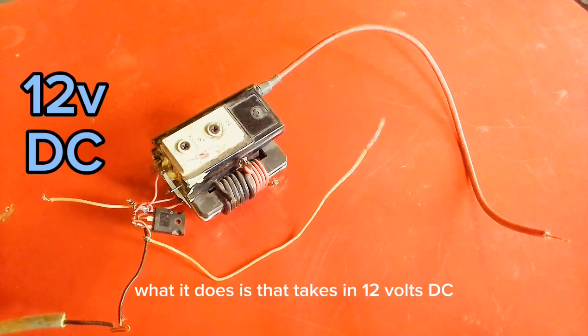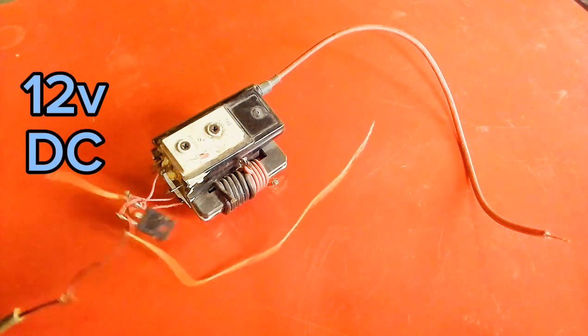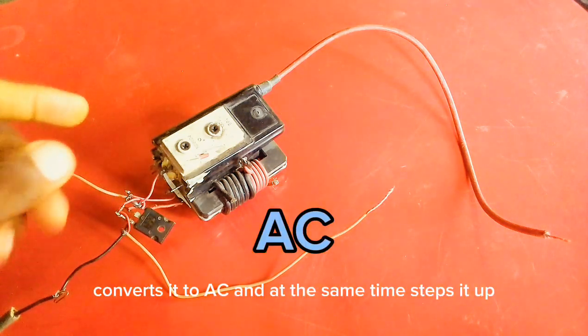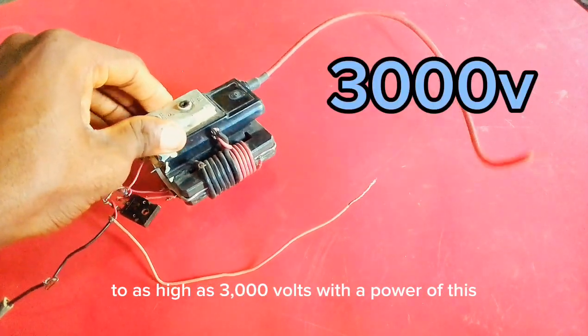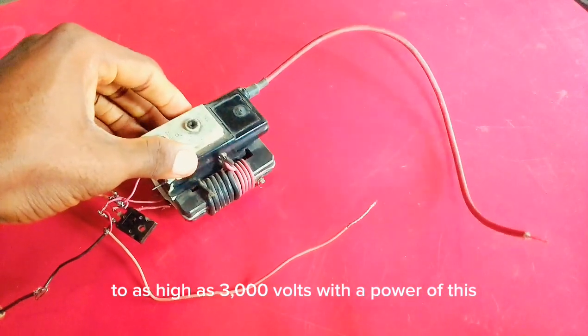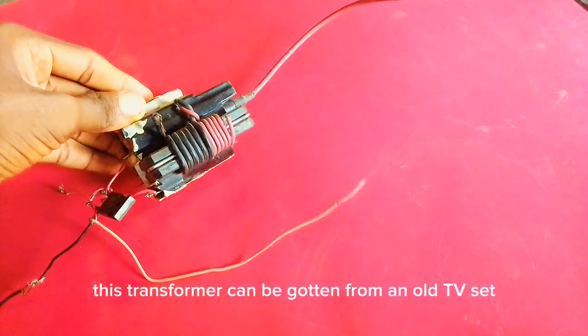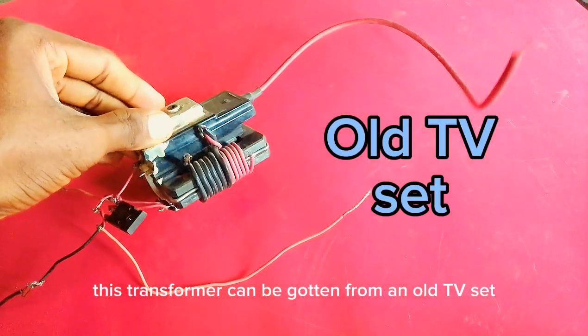What it does is that it takes in 12 volts DC, converts it to AC and at the same time steps it up to as high as 3000 volts with the power of this high voltage transformer. This transformer can be gotten from an old TV set.